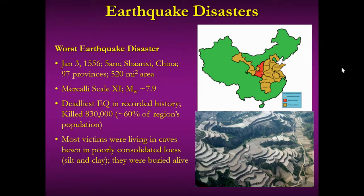Most of the deaths were because people were buried alive in their homes. Their homes were hewn out of hillsides in a very soft sediment called loess, which is kind of a silty clay. When the shaking began, things just started to crumble down and people were buried, unable to escape — a very terrible disaster. This pairs up two very deadly things: buildings can be deadly in an earthquake, and the ground and how much shaking occurs can make things more or less deadly.